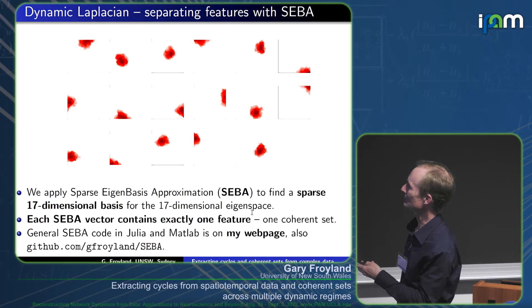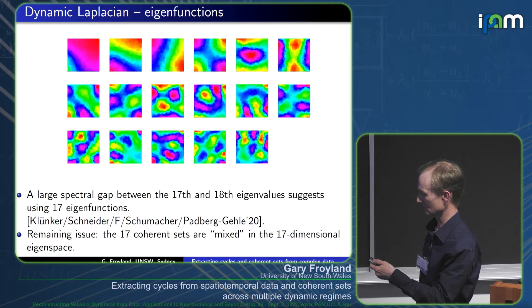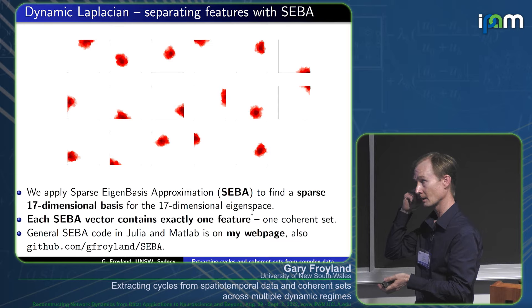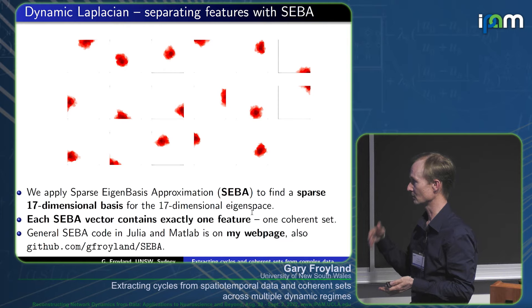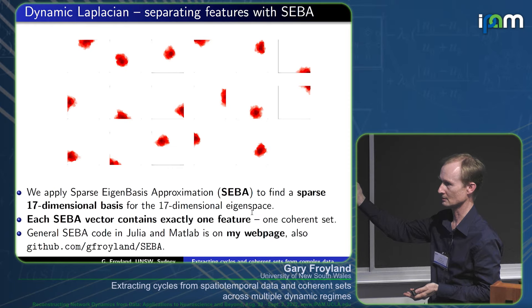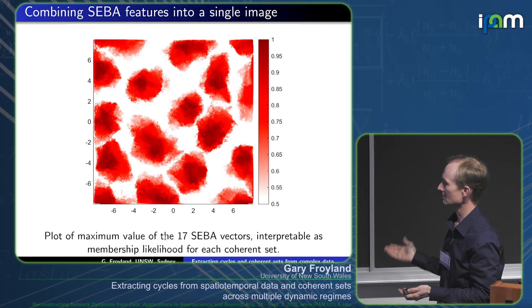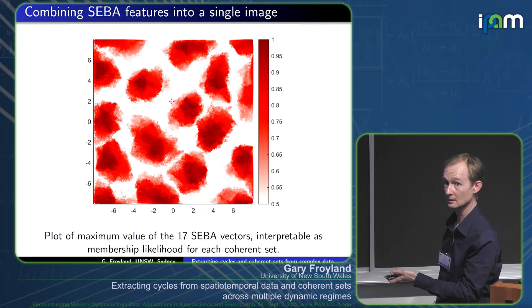Here are the results. Taking those 17 vectors and running the SEBA algorithm gives a sparse basis with geometrically local support — though that comes from the eigenfunctions, not the algebra. The geometry is encoded in the eigenfunctions; SEBA just reveals it through the new basis. Superimposing all 17 sparse vectors gives a single picture of the 17 superstructures.